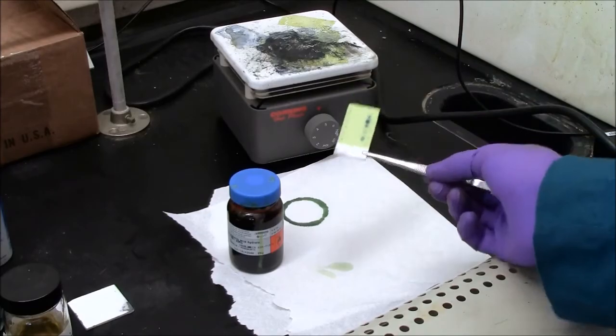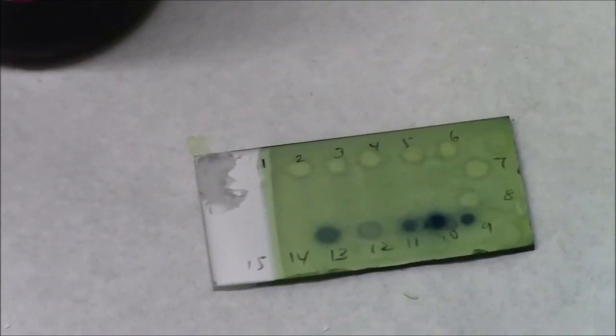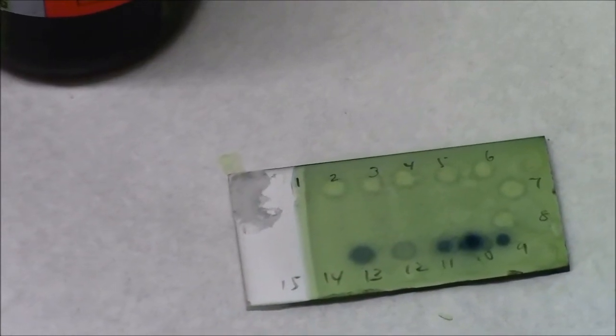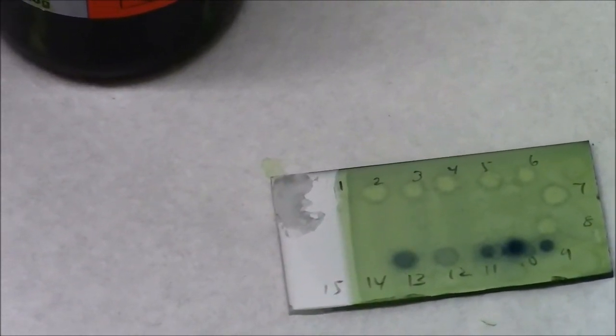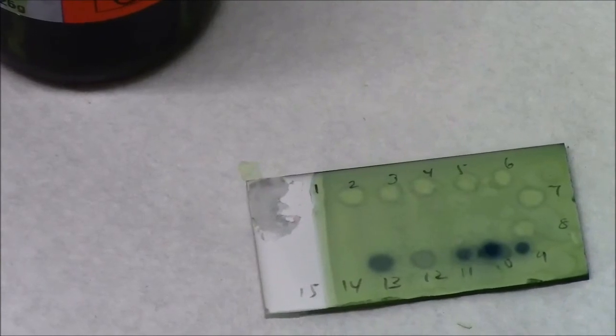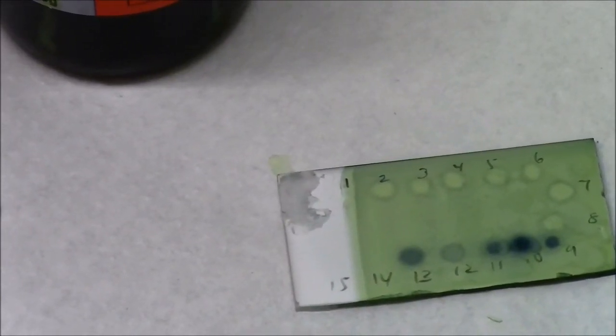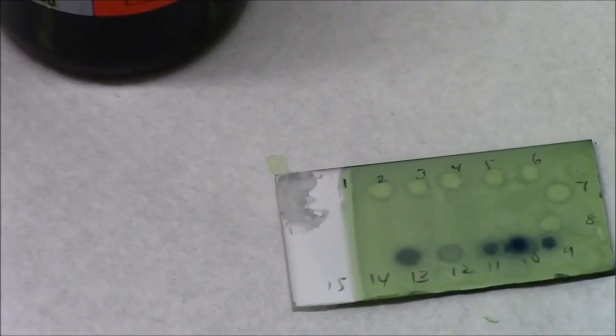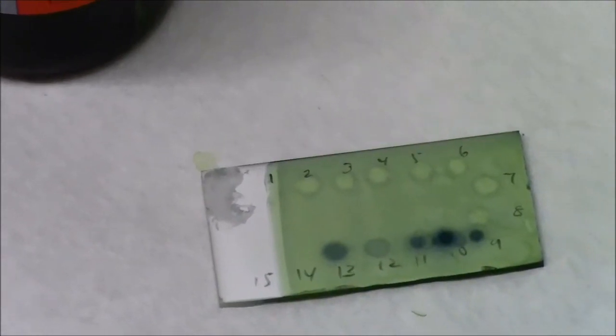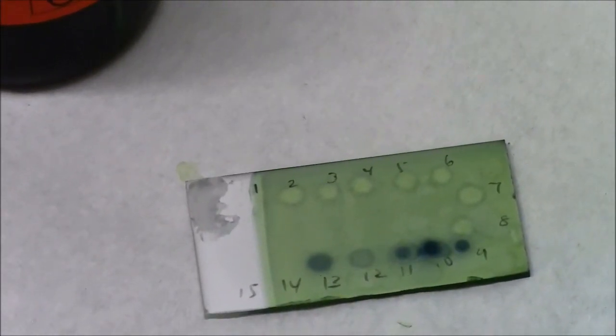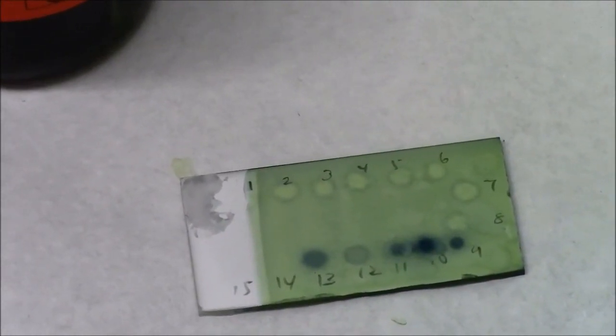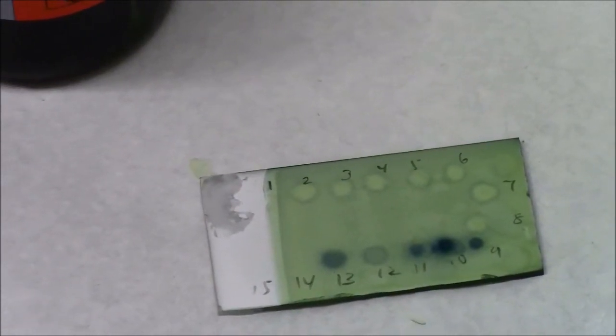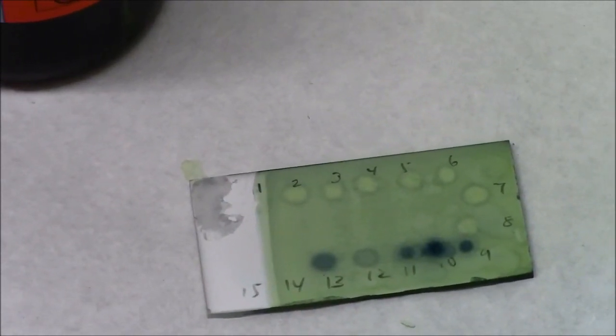This is great. I can see that certain fractions have material that's worth investigating. Fractions one, two, three, four, five, six, seven, eight are useless, but nine, ten, eleven have something of interest and looks like thirteen also has something of interest. So the fractions of interest are worth running on a real TLC plate that I developed to see what molecules these actually are.